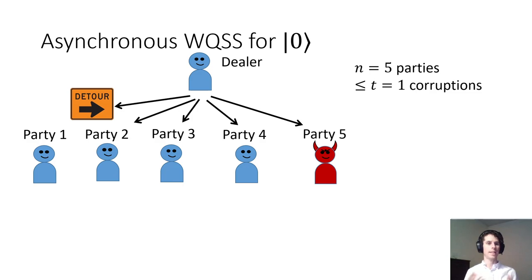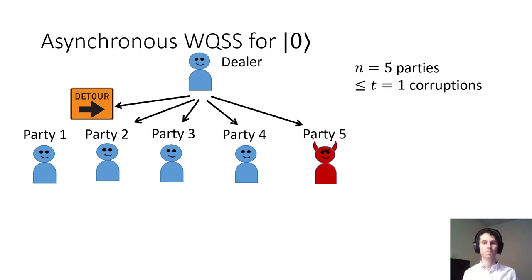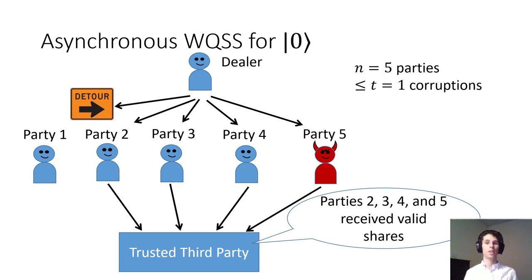Now let's move to the asynchronous case. Recall that in this setting, the protocol must progress with only n-minus-t participants, since if the t corrupted parties never sent a message, they can't be distinguished from an honest but delayed party. In the picture, party one's share is delayed by the network. The classical approach to solving this problem is to agree on a core set of parties who received correct shares. These parties can be expected to contribute during the reconstruction phase, and since this is an agreement on a classical value, we can use the classical trusted third party for this.